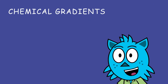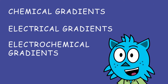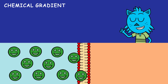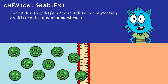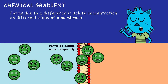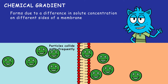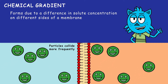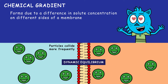There are chemical gradients, electrical gradients, and electrochemical gradients. A chemical gradient forms due to a difference in solute concentration on different sides of a membrane. On the side with a higher concentration, particles collide more frequently and thus are pushed across the membrane to the other side more often. Eventually, a dynamic equilibrium is reached.